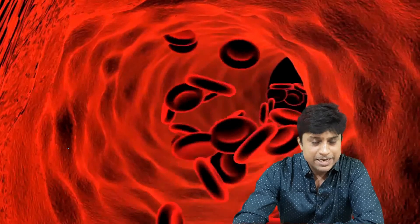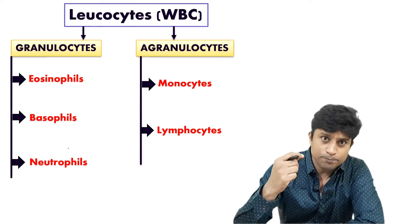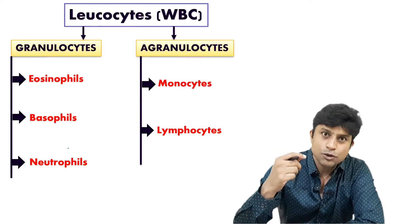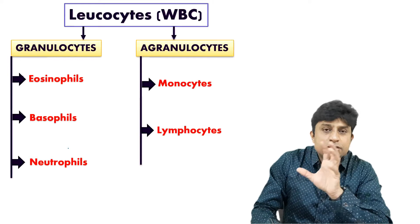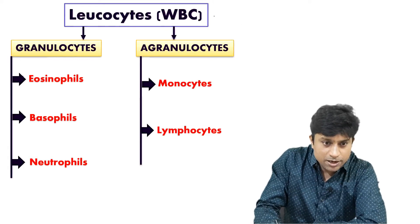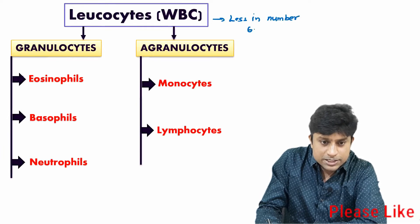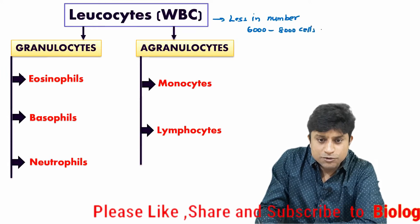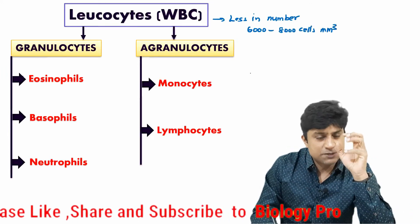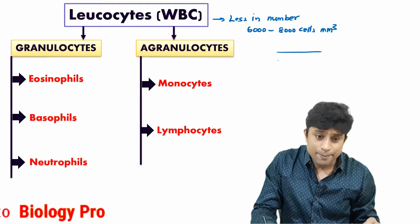Next we have WBC, which are called leukocytes. The process of formation of leukocytes is called leukopoiesis. White blood cells are less numerous compared to RBC. The number of WBC is six thousand to eight thousand cells per cubic millimeter of blood.